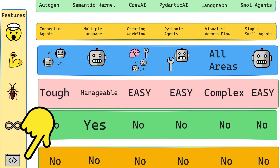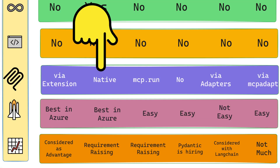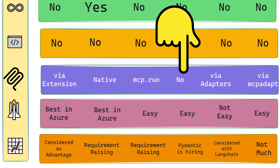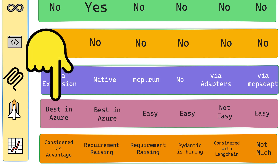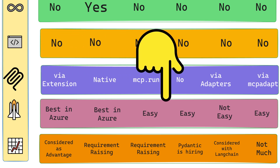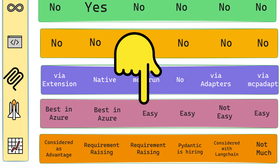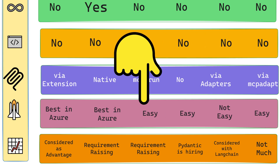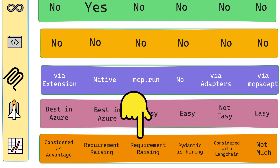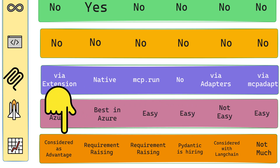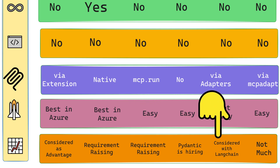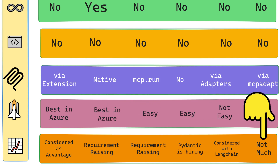No framework directly integrates with IDEs natively. When it comes to MCP server integration, only Semantic Kernel has native integration, while other frameworks have adapters or extensions to be mastered. Autogen and Semantic Kernel are best deployed in Azure, while LangGraph has challenges with ease of deployment. CrewAI and Pydantic AI have easy deployments and better job opportunities, while SmolAgents is best suited for learning about agents.